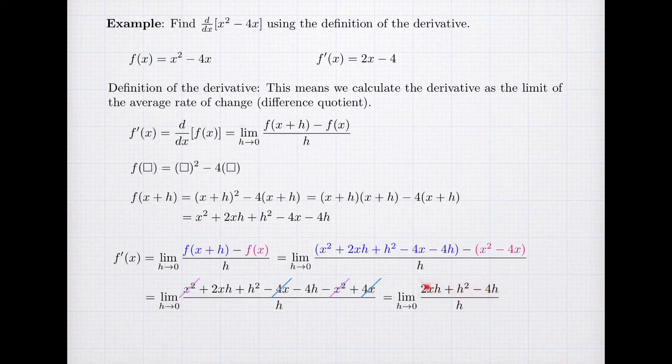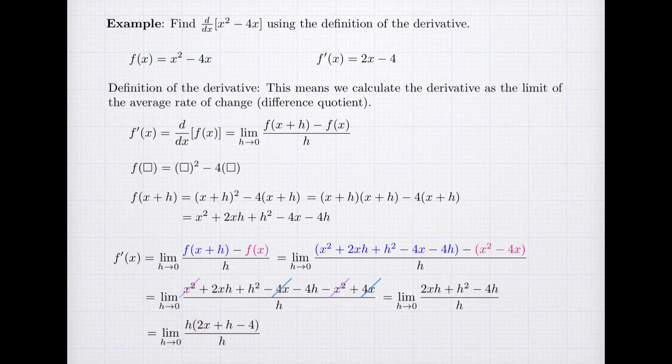And the best way to do that is to factor h out of the top. So that when I factor it, I get h times what's left is 2x plus h minus 4. And I can now cancel the h's and rewrite my limit.